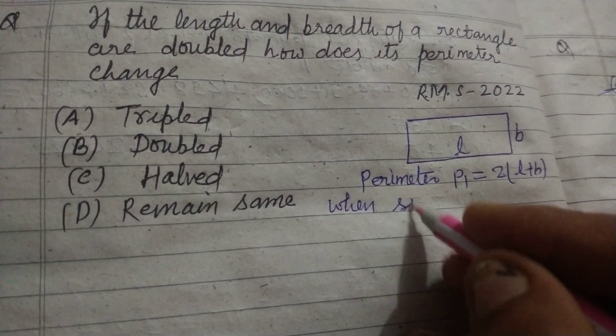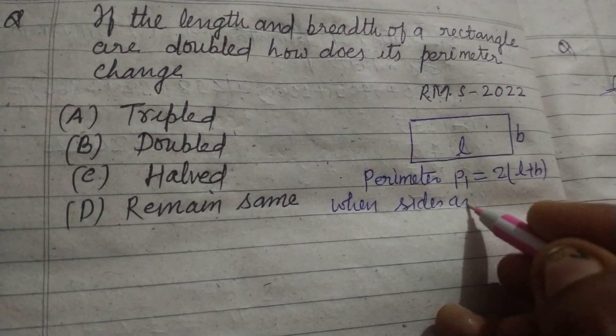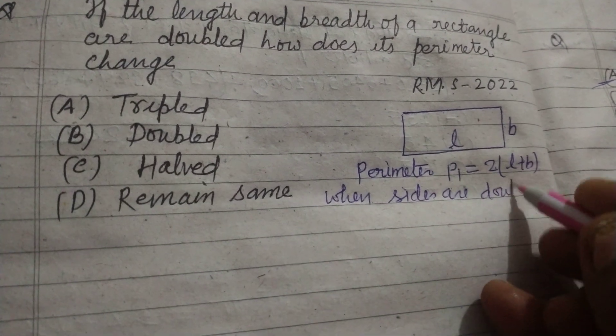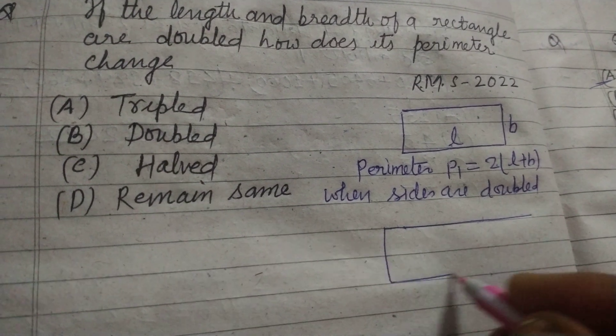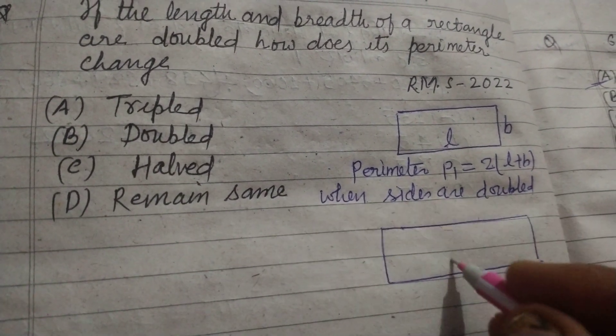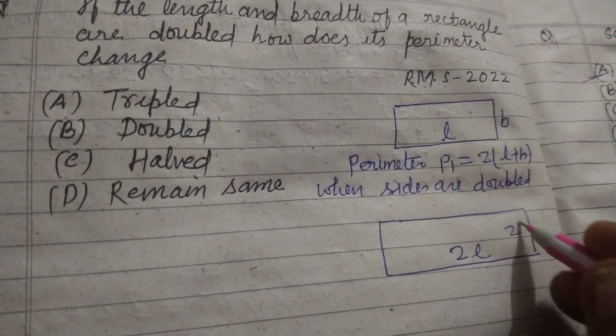When sides are doubled, so in this case the perimeter becomes, length becomes 2L and breadth becomes 2B.